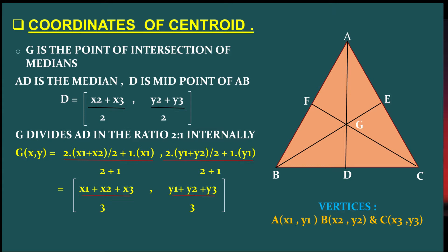With point A(x1, y1) and D((x2+x3)/2, (y2+y3)/2), G divides AD in the ratio 2 is to 1. The coordinates of G work out to ((x1+x2+x3)/3, (y1+y2+y3)/3). These are the coordinates of the centroid of a triangle.